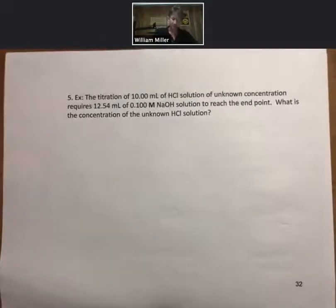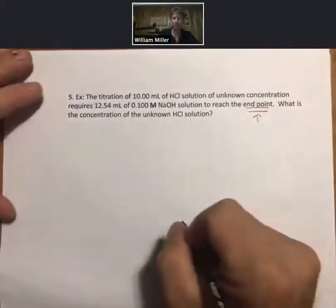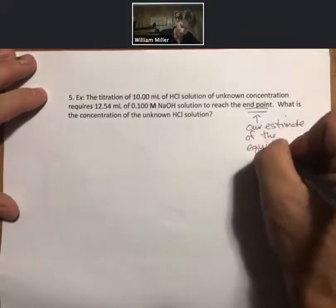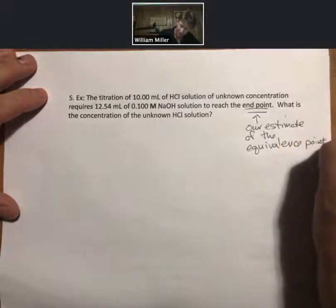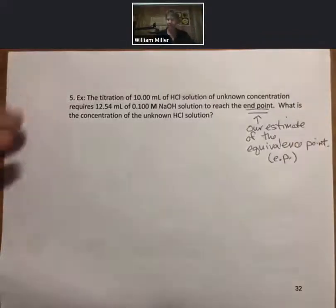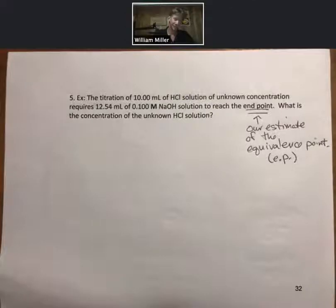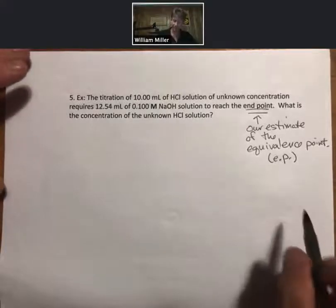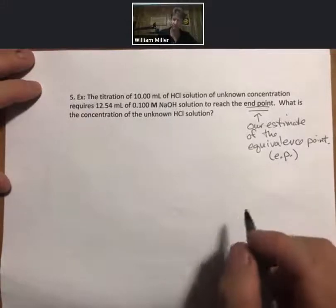The titration. Here's a typical problem that is called the titration problem. The titration of 10 milliliters of hydrochloric acid solution of unknown concentration requires 12.54 milliliters of 0.100 molar sodium hydroxide solution to reach the end point. The end point is going to be our estimate of the equivalence point. E.P. is for equivalence point for me.